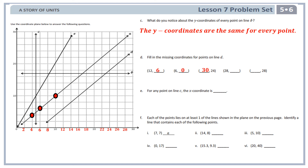The next one would be 30 comma 24. E: for any point on line C, the x-coordinate is blank. Here is line C, and you notice line C is moving vertically, parallel to the y-axis, but it's not really moving along the x-axis. That means the x-coordinate for every point on line C is the same, and that x-coordinate is between 4 and 6, which makes the x-coordinate 5.